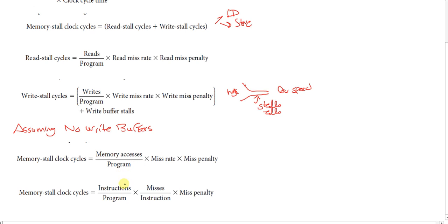If we translate that: what's the memory access per program? It's actually the instructions per program, times misses per instruction, times the miss penalty.